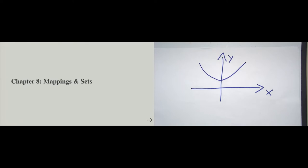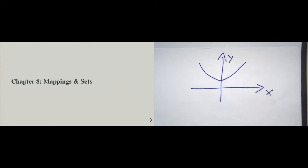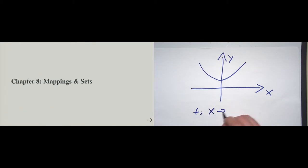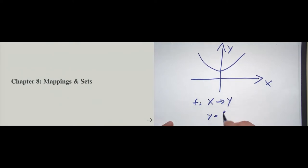Where is the mapping here? A function is nothing but a mapping from the x-axis to y. So f is a function that maps the x's to the y's. Usually we write that as a lowercase y is equal to a function of x. We know that from high school. And as I said, this function is continuous and computers cannot be continuous.